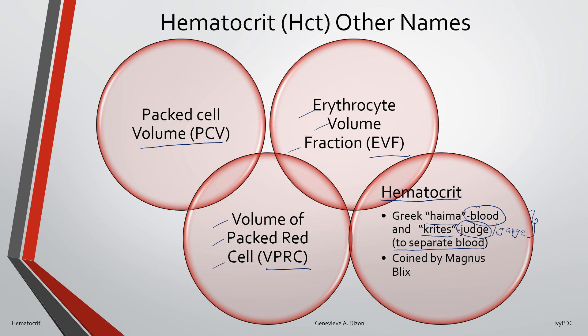In 1891, a Swedish physiologist named Magnus Blix was the one who coined the term hematocrit. In medical slang, hematocrit is also known as crit.